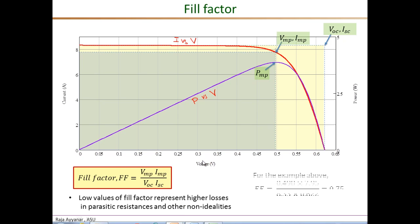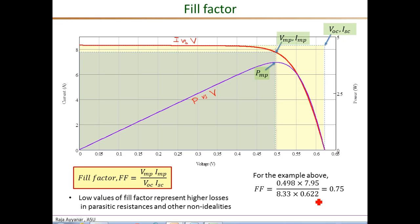For this particular example, the maximum power point voltage VMP is 0.498 V and the maximum power point current IMP is 7.95 A. The VOC is 0.622 V and ISC is 8.33 A, so the fill factor is (0.498 × 7.95) / (0.622 × 8.33) = 0.75, which is a typical value for commercial PV cells.